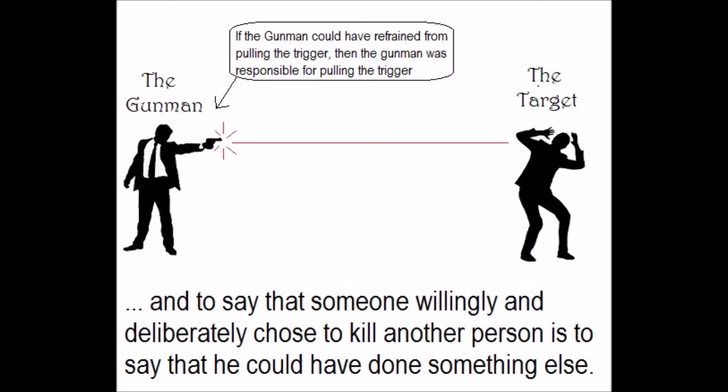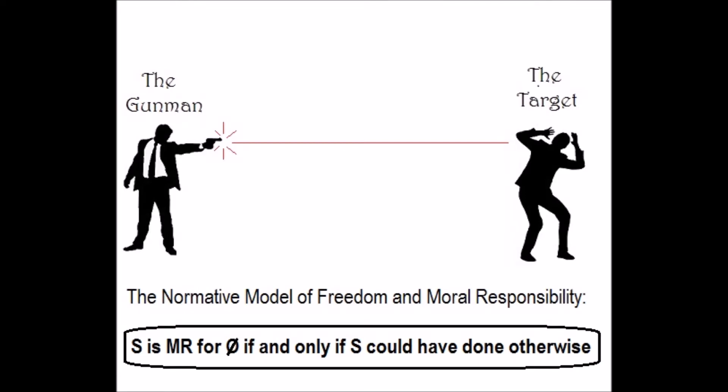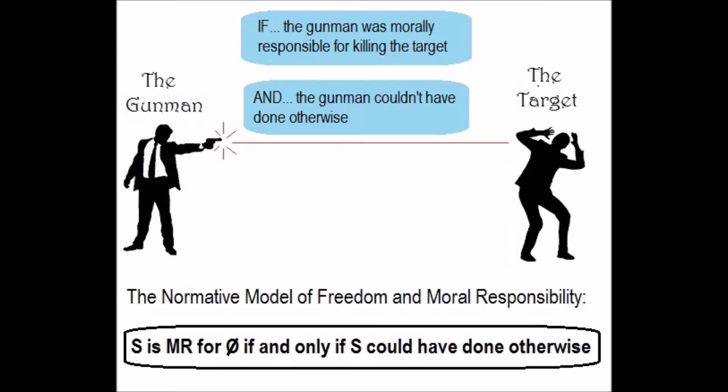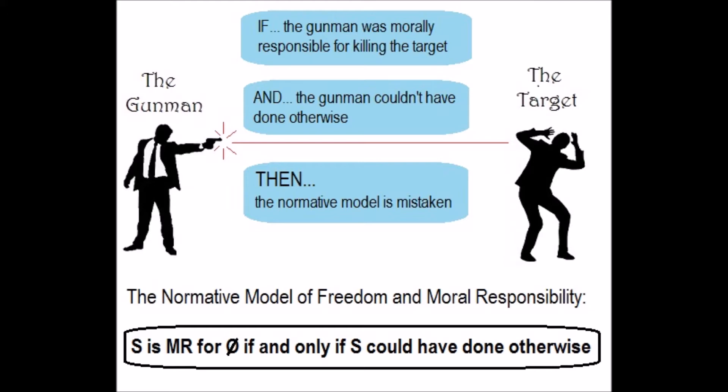Now let's set up Frankfurt's strategy. The raw logic for the normative model goes like this: a person S is morally responsible for an outcome if and only if that person could have done otherwise. Frankfurt's strategy is this: if we can show that someone is morally responsible for something and they couldn't have done otherwise, then the normative model is false. So Frankfurt's paper discusses some ways that intuitively we would agree that someone is morally responsible for what they do, while also agreeing that it was impossible for them to do otherwise. If we can show that, then we have good reason to reject the normative model.